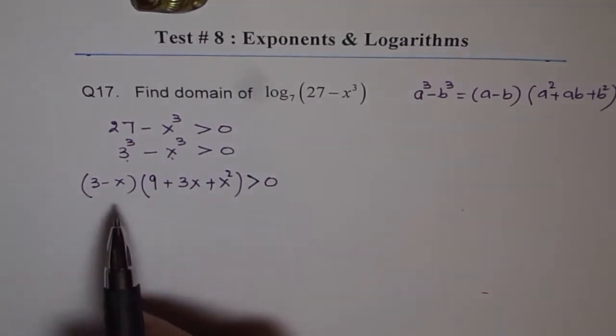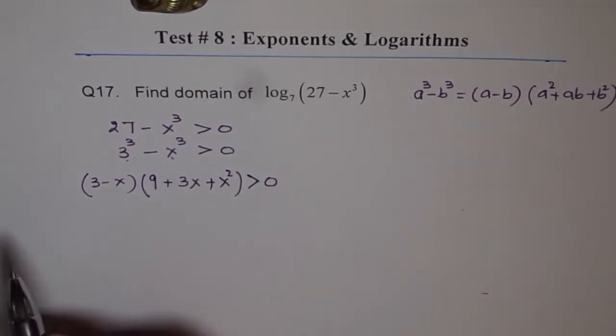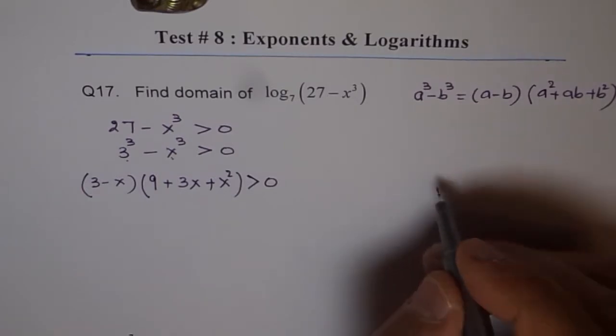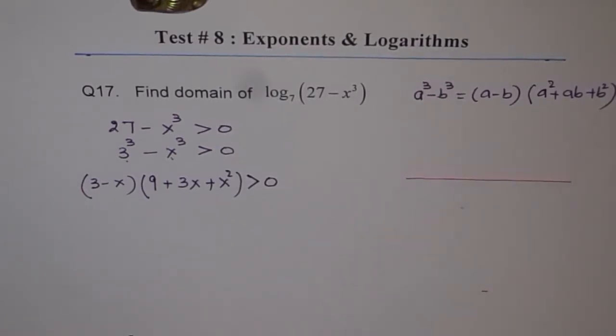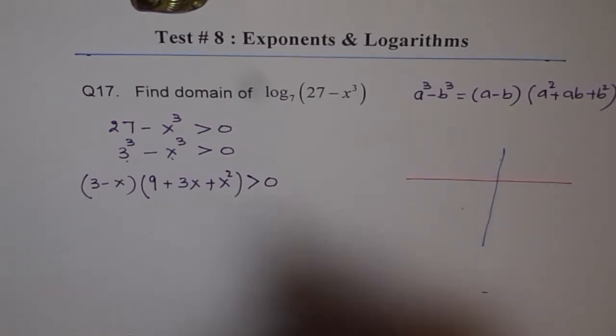Now, we know this will be 0 at x equals to 3. So that means x equals to 3 will give us a 0.